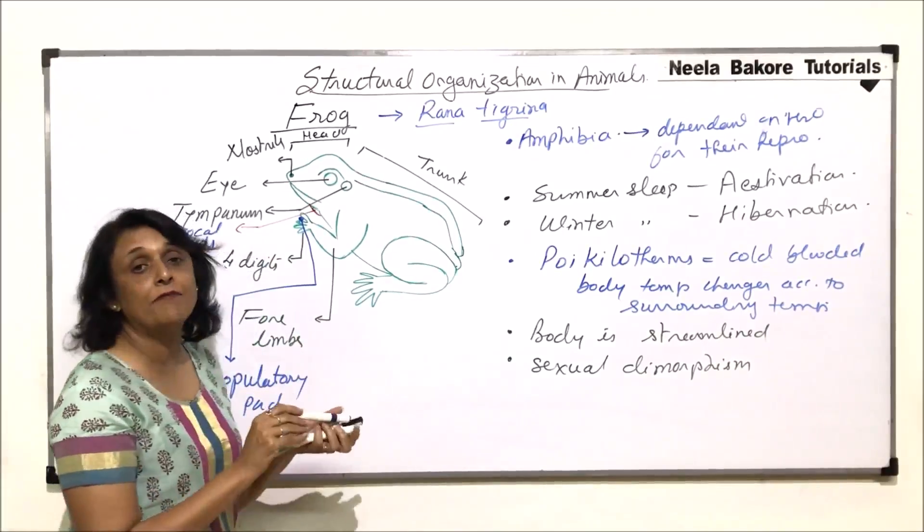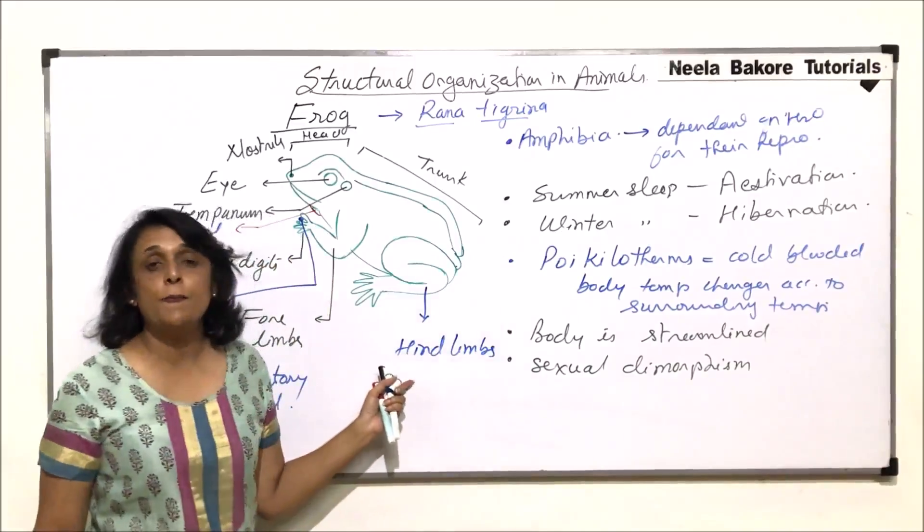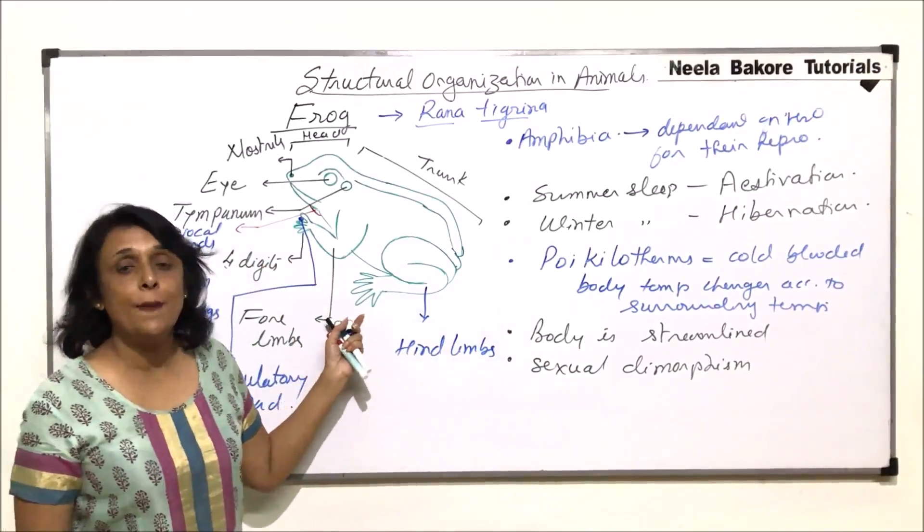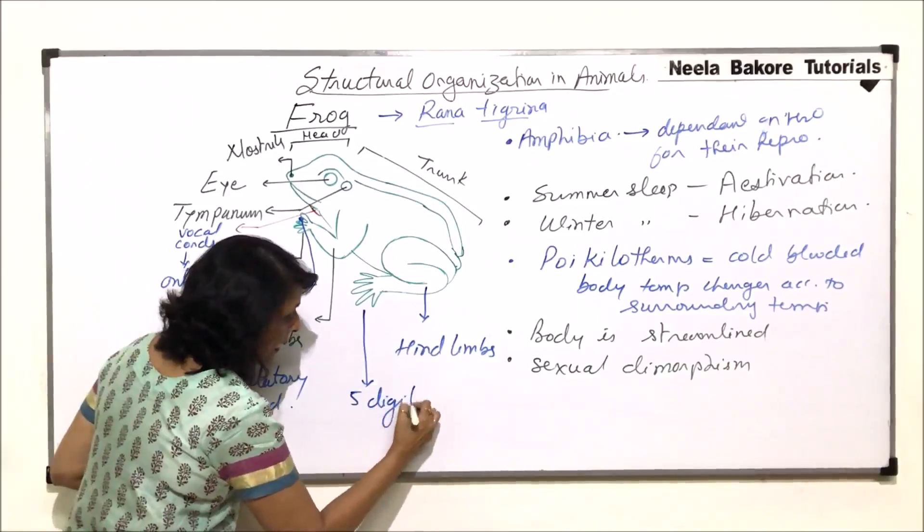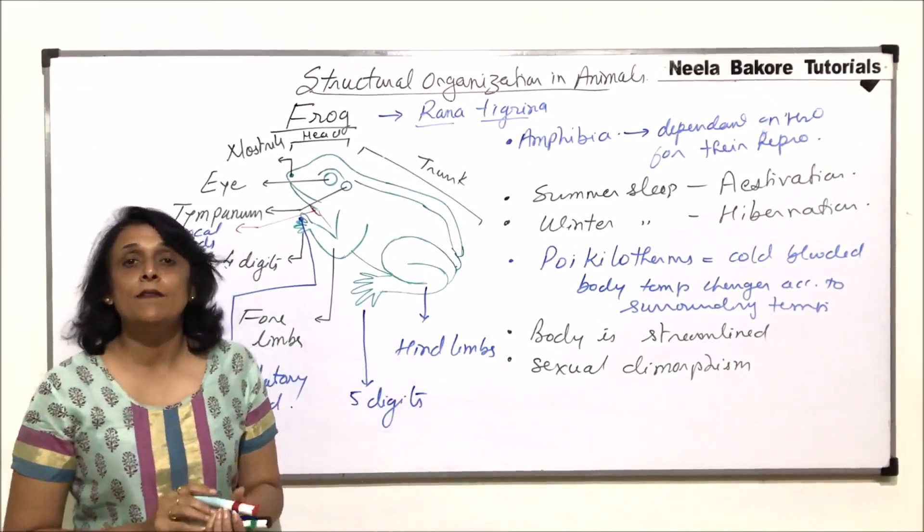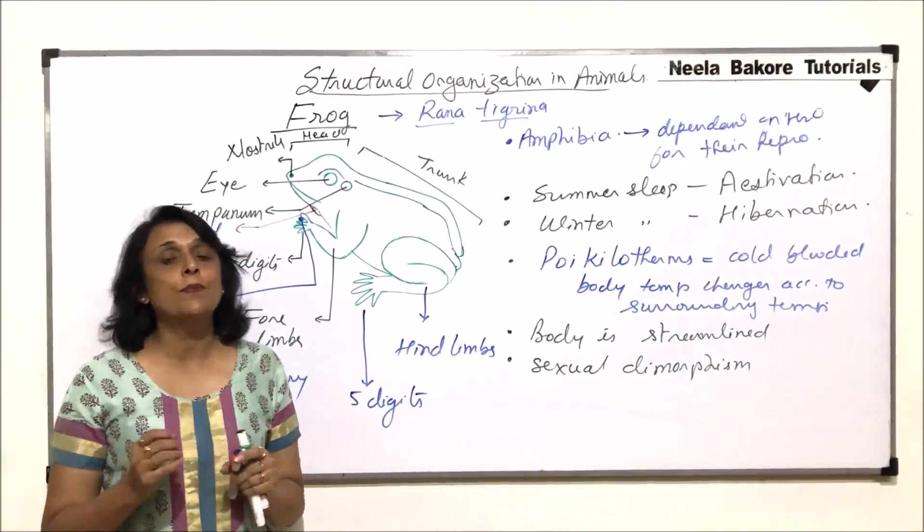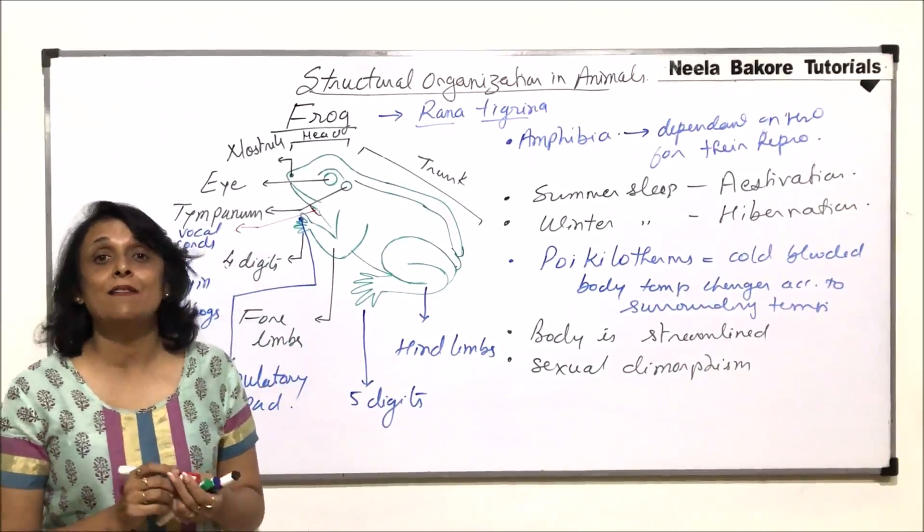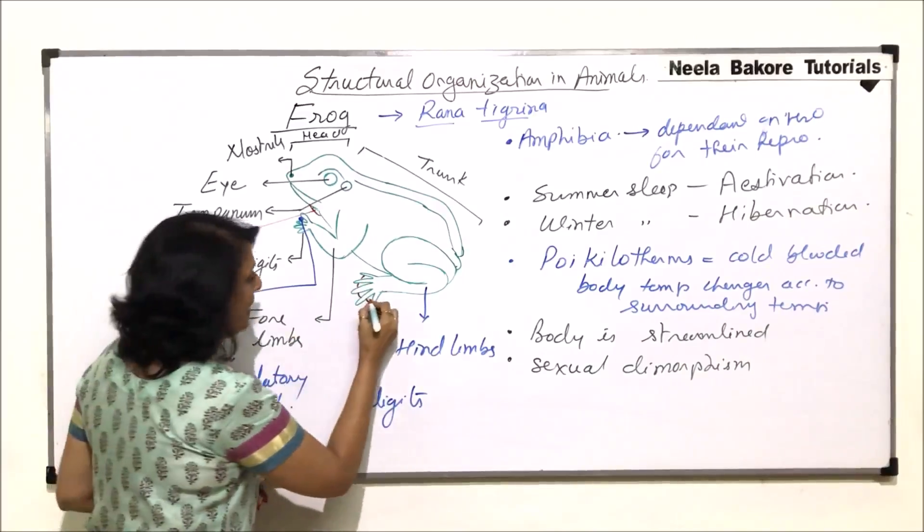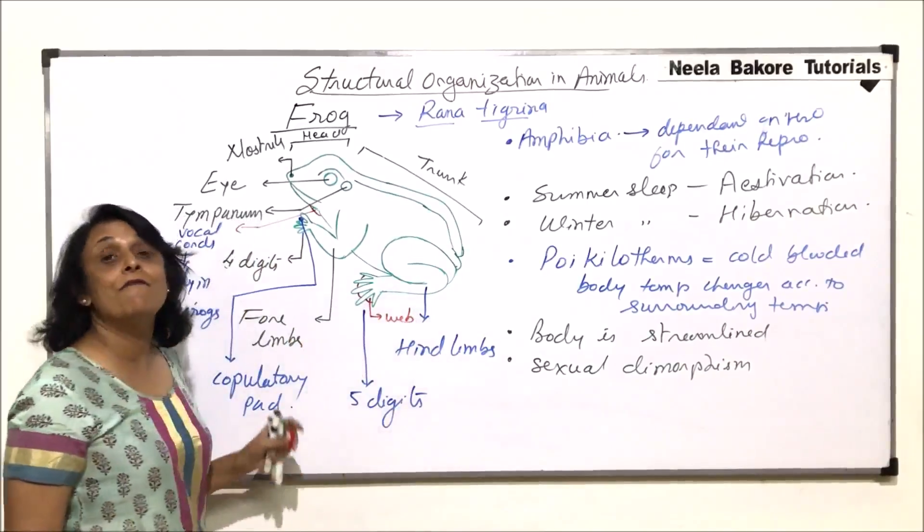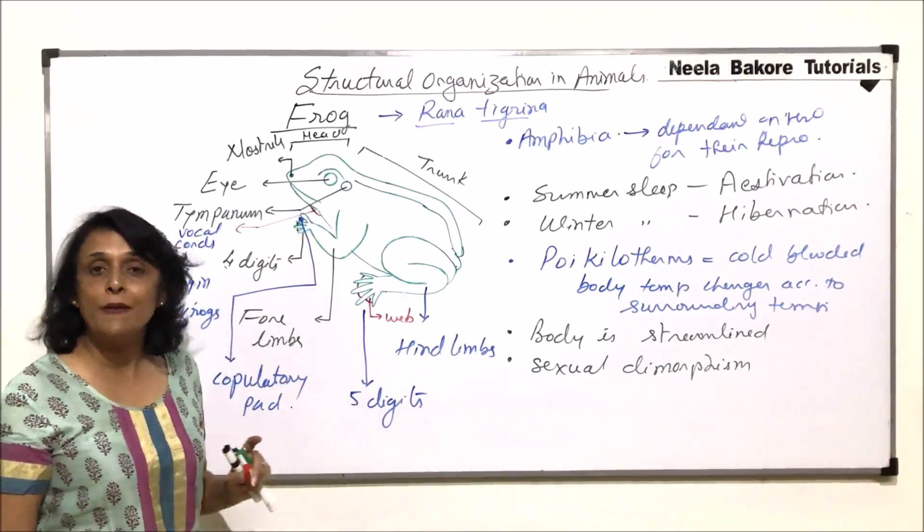Now the hind limbs are very powerful. These are the hind limbs, and they are muscular and powerful which help the animal to jump and leap. And in the hind limb, there are five digits. As we have said that they can live on land as well as in water, so when they are in water, they would require structures which would help them to swim. And those structures are webs. So between the digits there are folds of skin, and this structure is known as the web. So they have webbed feet.